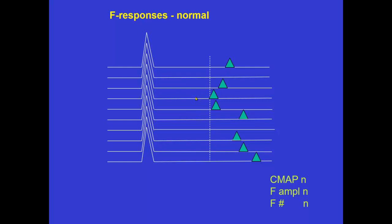Here is a very schematic interpretation of F-waves. These are the CMAP and here are F-waves, which as you know is a sum of a few axons that give rise to a motor unit potential surface recorded. Here is the variability since we have different axons that are active, and the shortest is here. CMAP amplitude is normal, F amplitude is normal — that is a measure that we usually don't calculate — and the number of F-responses is normal. When we have demyelination, all the F-responses are delayed.